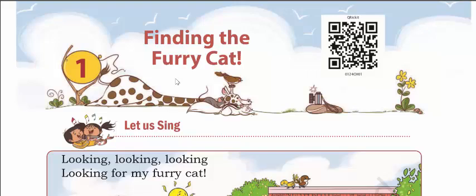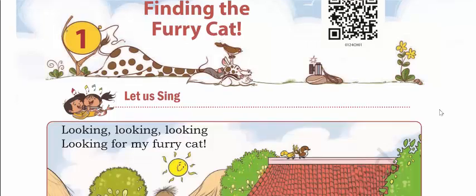Hi everyone, welcome back. Today we are going to start with the Class 1 Maths Chapter 1, that is 'Finding the Furry Cat.' So let's begin the chapter. Now what does 'finding the furry cat' mean? Finding means they are searching — for the furry cat. Furry cat means a cat which has a lot of hair on its body. Now let's begin the chapter.